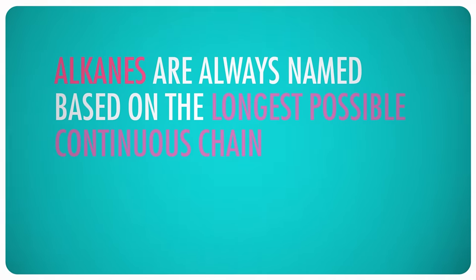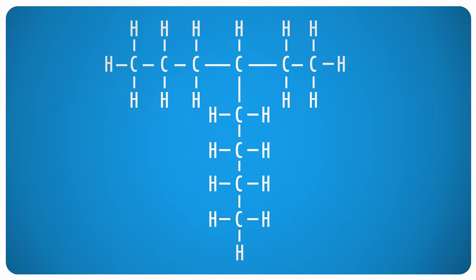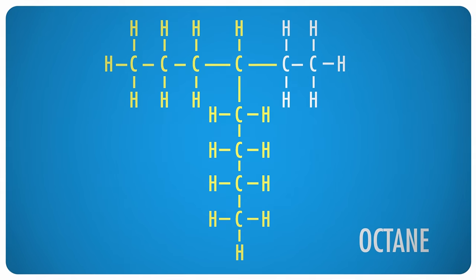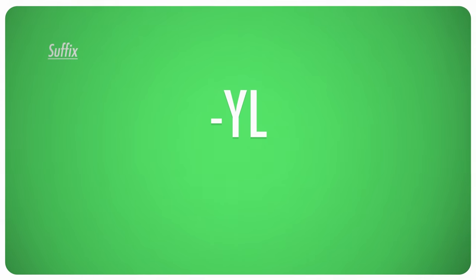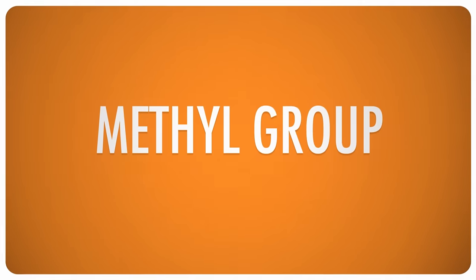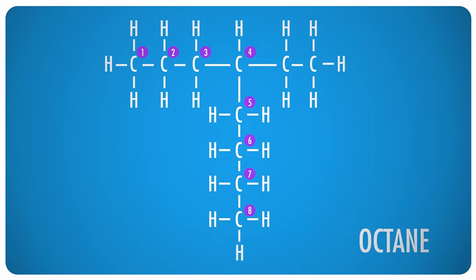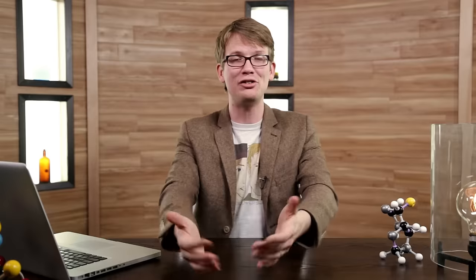There are a few naming rules specific to alkanes. Alkanes are always named based on the longest possible continuous chain in their structure. For example, even though this looks like a 5-carbon chain intersecting with a 6-carbon chain, it actually contains an 8-carbon chain if you look closely. So this is considered an octane with a 2-carbon chain attached to one of its carbon atoms. When shorter carbon chains are attached to longer ones, they're named using the same prefixes but with -yl on the end to show they're just attachments. Since this attachment has two carbons, we call it an ethyl group. Attachments are also given a number to show where along the chain they're attached, and the chain is numbered in the direction that gives attachments the lowest numbers possible. So this compound is called 4-ethyloctane.